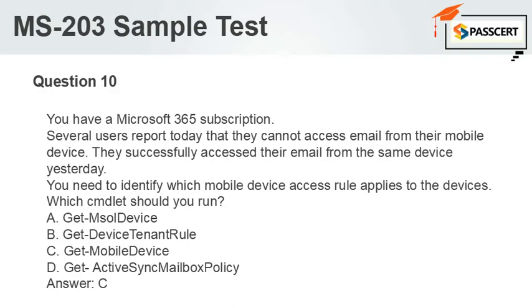Question 10. You have a Microsoft 365 subscription. Several users report that they cannot access email from their mobile device. They successfully accessed their email from the same device yesterday. You need to identify which mobile device access rule applies to the devices. Which cmdlet should you run? A. Get-MsolDevice. B. Get-DeviceTenantRule. C. Get-MobileDevice. D. Get-ActiveSyncMailboxPolicy. Answer: C.